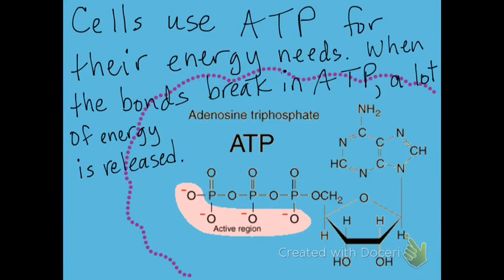What's the big deal about ATP? Cells use ATP for their energy needs. ATP means adenosine triphosphate. When the bonds break in ATP, a lot of energy is released — that's what the cells use for all their processes.